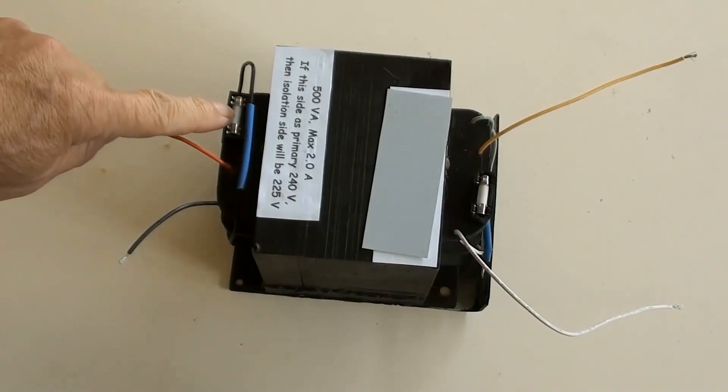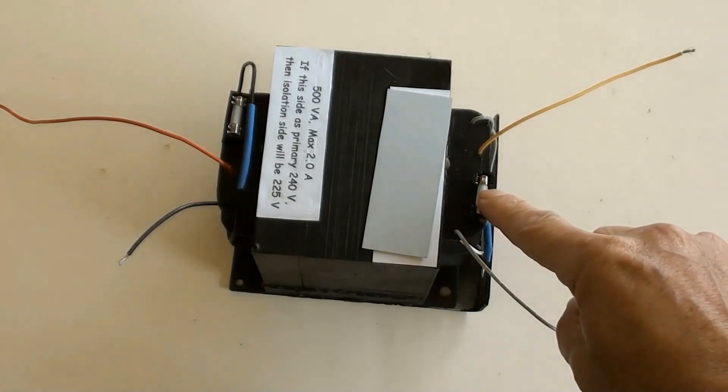A 3 ampere fuse has been installed on the primary side, and so has the isolation side.